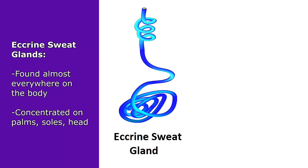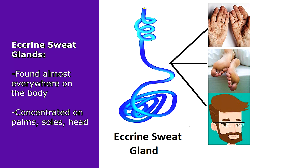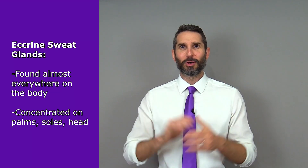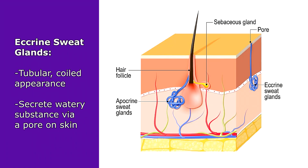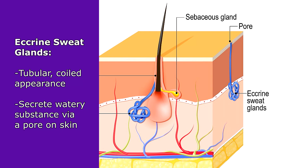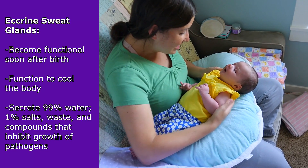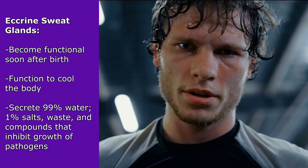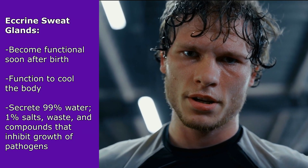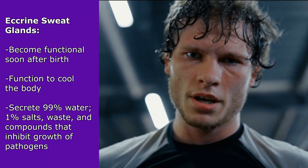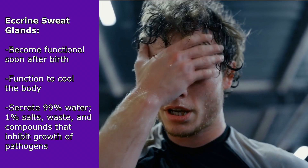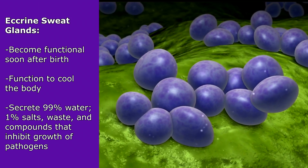The first type is eccrine glands. These are found almost everywhere on the skin surface, concentrated on the palms, soles of the feet, and your head. These tubular glands have a coiled appearance and secrete a watery substance through a pore on the skin's surface. They become functional soon after birth. The primary function of eccrine glands is to help cool the skin, but they also secrete up to 1% of salts, waste, and other compounds that inhibit the growth of pathogens.